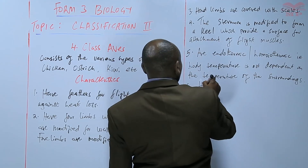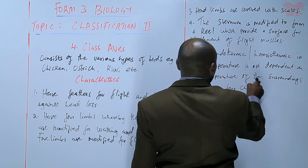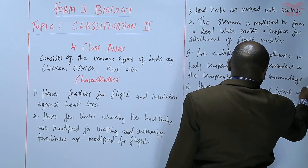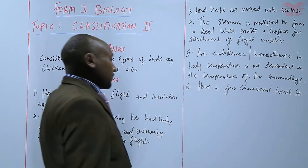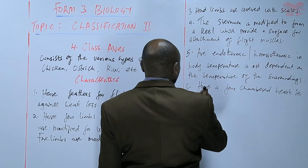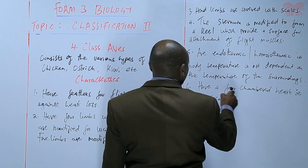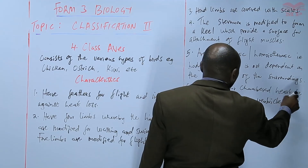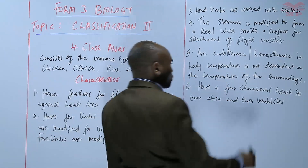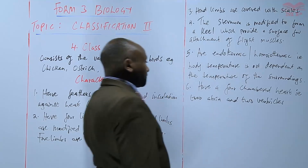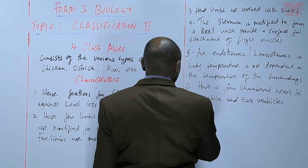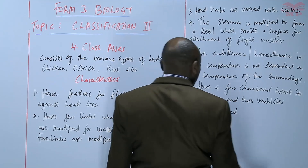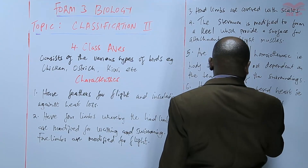Birds have a four-chambered heart, that is two atria and two ventricles. They also have a closed circulatory system, just like the others.